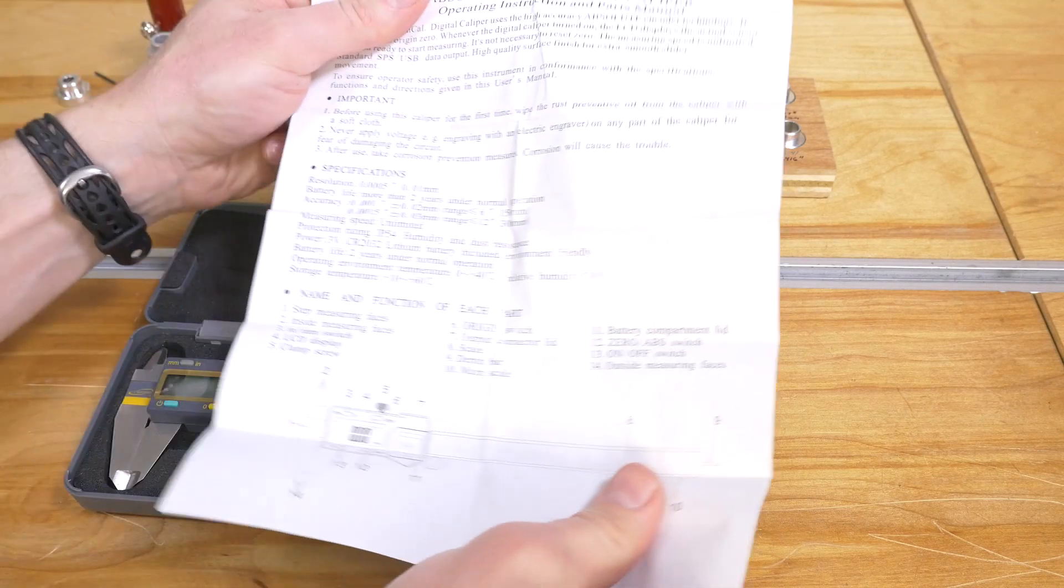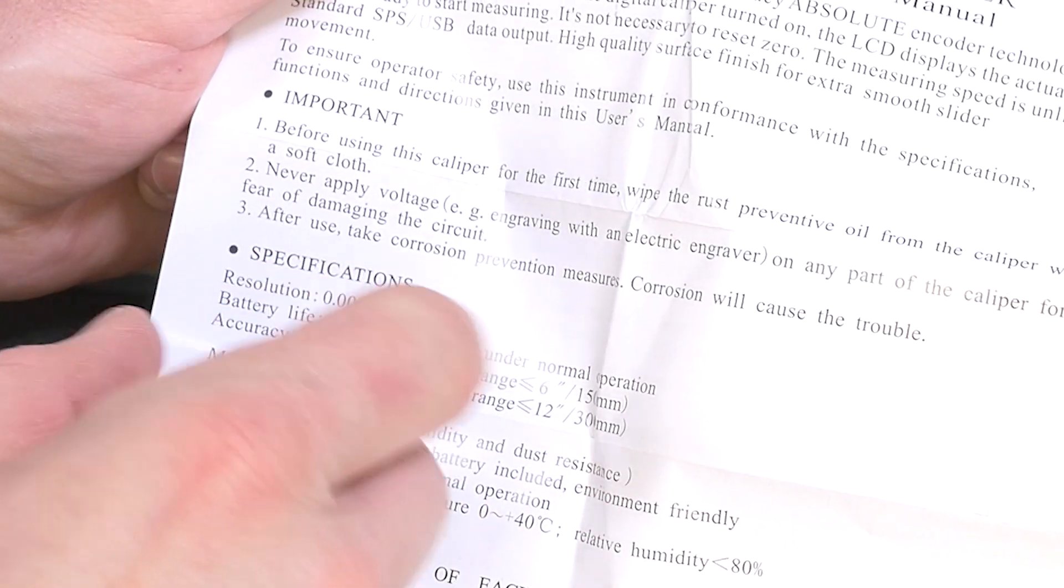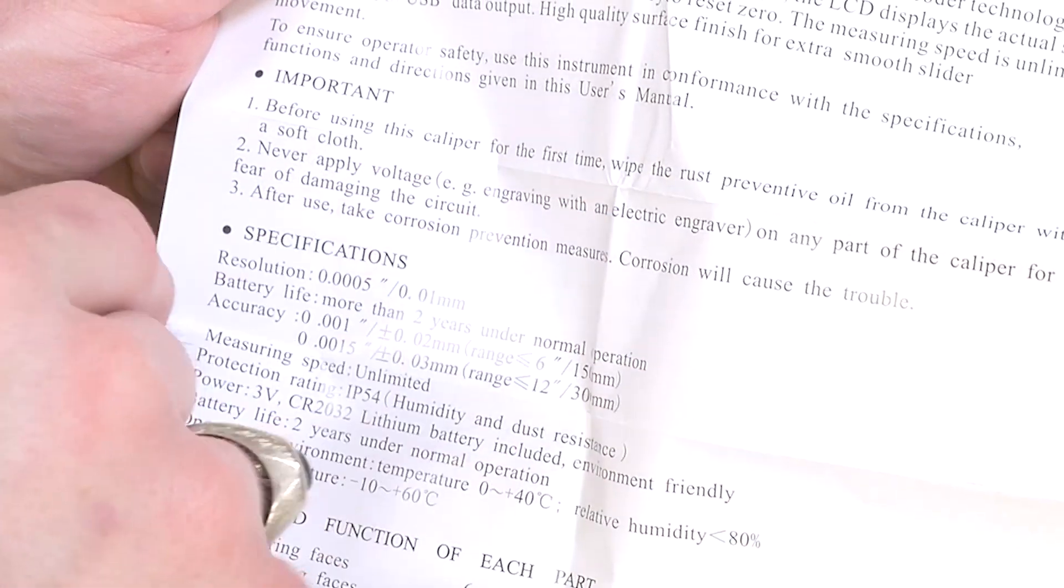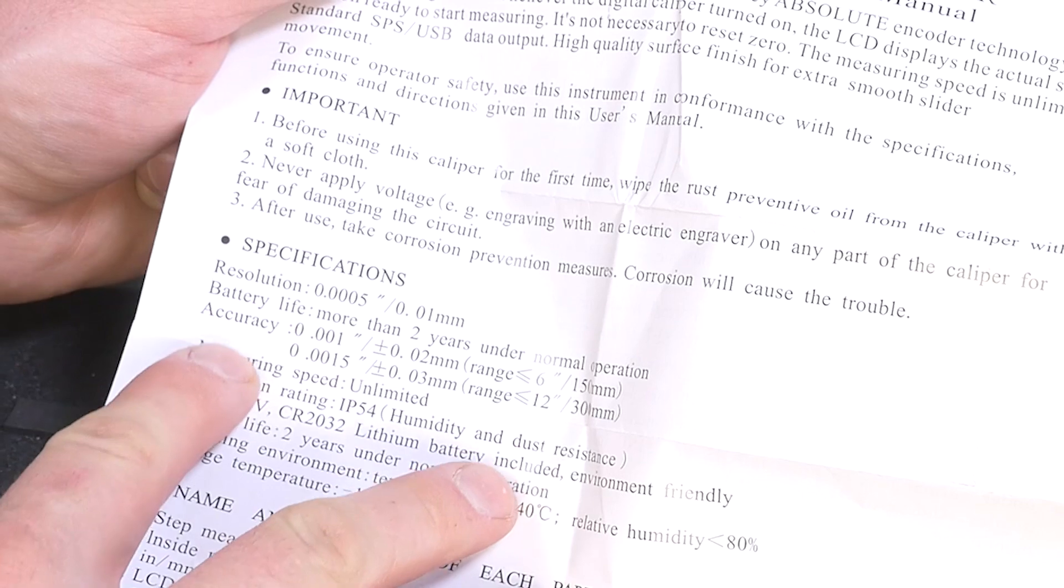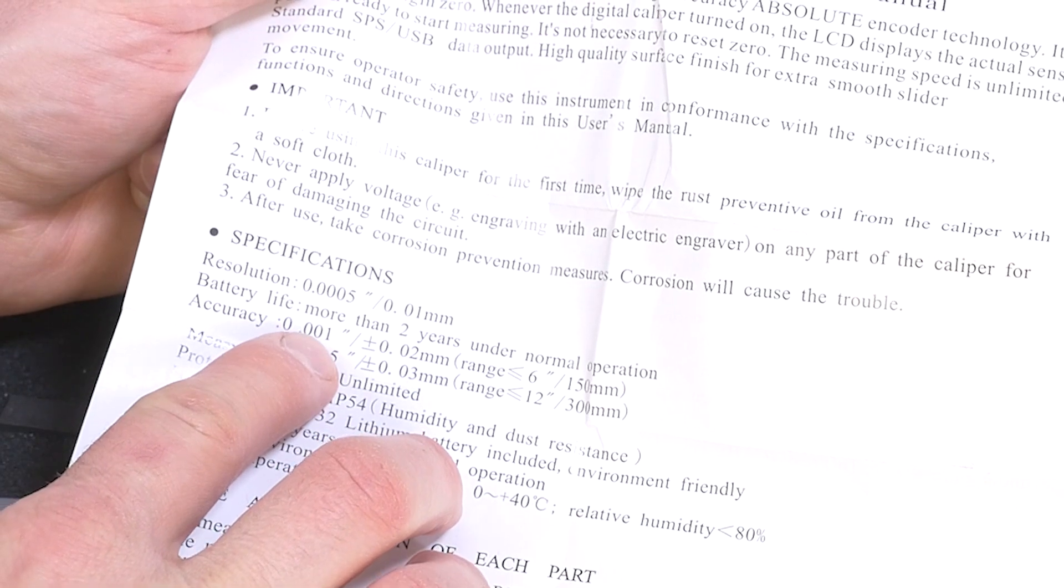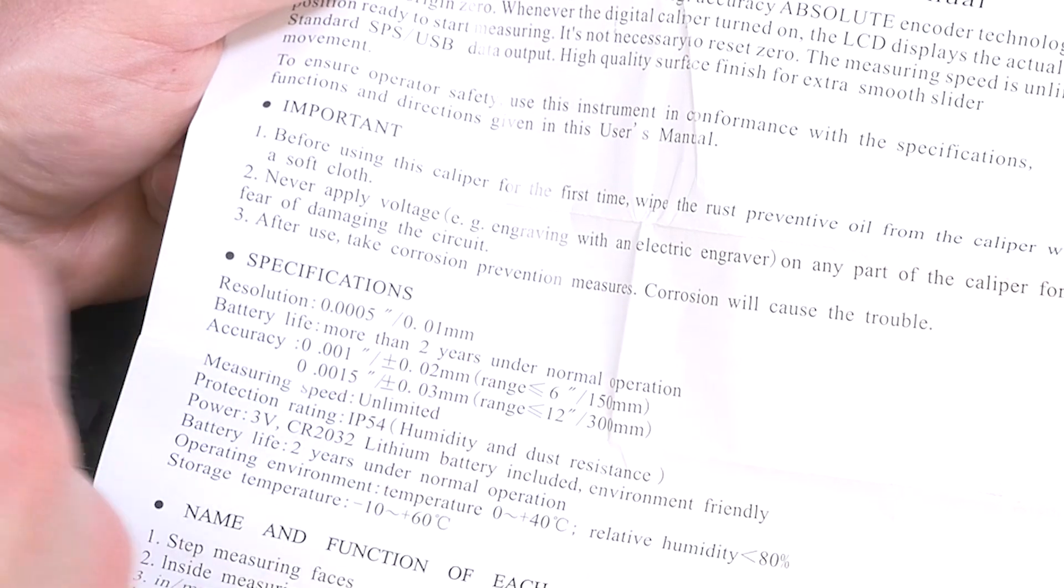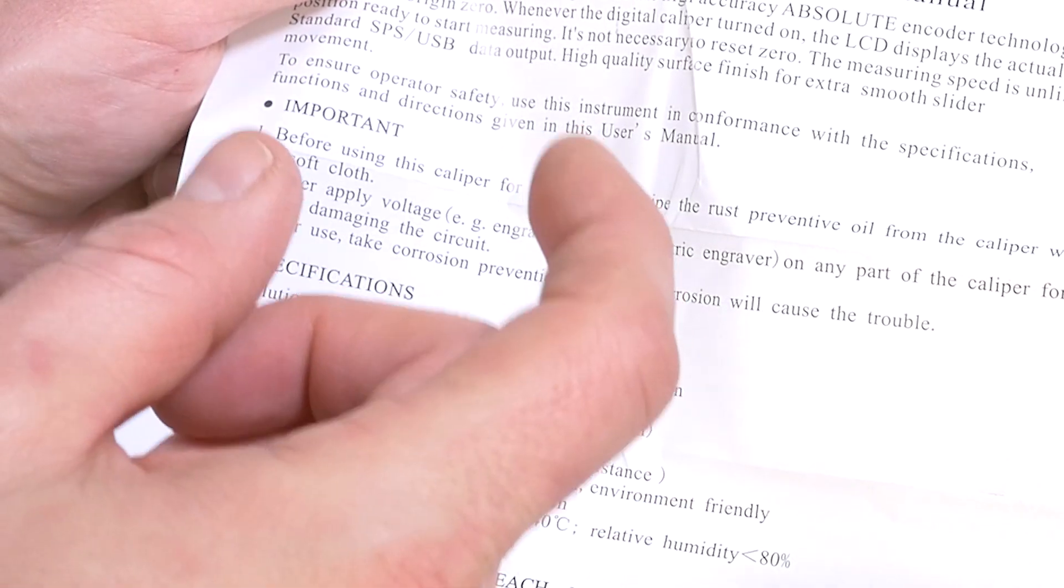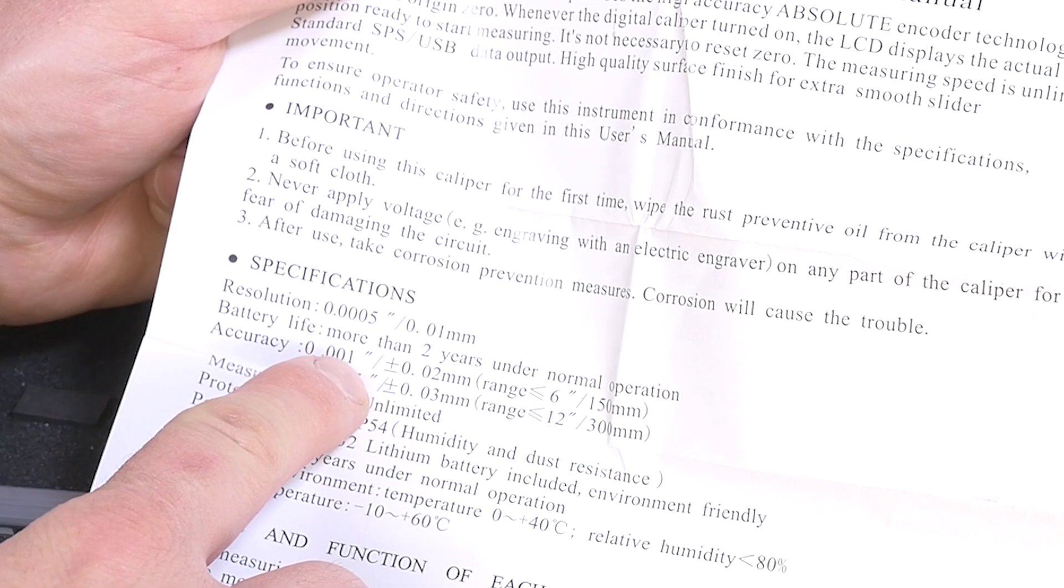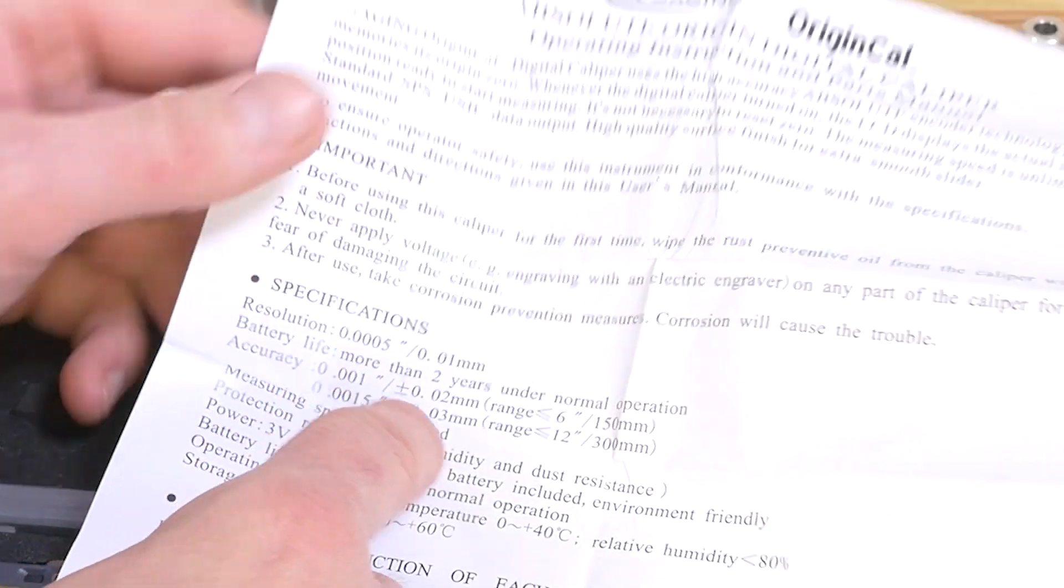We've got the instruction sheet here, so we can see we have a resolution of a half of a thousandth of an inch. That means that's the minimum distance it's capable of measuring when you open and close the jaws. It says more than two years under normal operation for battery life, accuracy of one thousandth of an inch. That means relative to some fixed known value, if we had a block of aluminum that was an inch exactly and we measured it, it should be within a thousandth of that inch reference point. And when we move it, we can detect up to a half thousandth of an inch of movement.